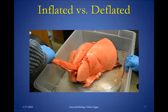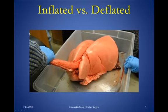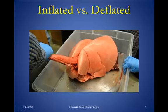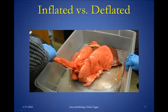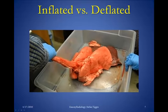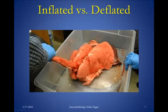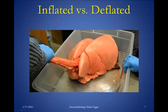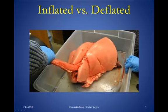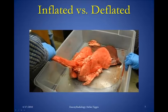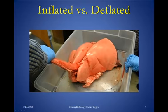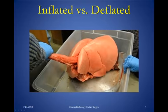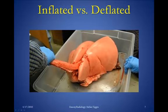Here's one of my favorite cine loops — lungs inflating and deflating. When the lungs deflate, there's less volume and they become denser, taking on soft tissue density. That's what happens with atelectasis of a lung: the lung deflates, it takes on soft tissue density, and the mediastinum shifts toward the side of the increased soft tissue density because there's less volume there.